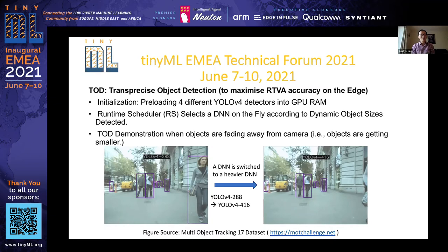In the demonstration figures at the bottom, when the objects are fading away and getting smaller, TOT is using the YOLO B4-288 model. TOT then switches the current YOLO model to YOLO B4-416, which is heavier than the current model, to detect smaller-sized objects.